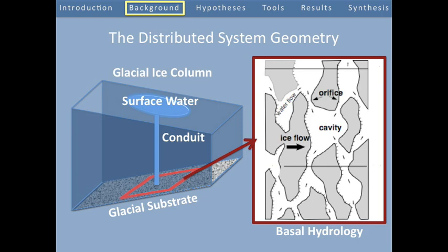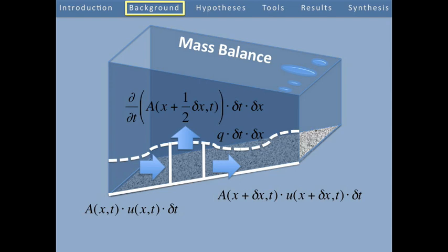Now that we all have the same qualitative picture in our heads, I want to turn this cartoon into a quantitative model. To do so, I'm going to use conservation of mass for water flow near the bed of this ice column. In the figure you're looking at right now, you see a series of expressions and arrows in a volume element sitting near the bed of this ice column. Each one of these expressions describes the volume of water flowing through or out or into this volume element.